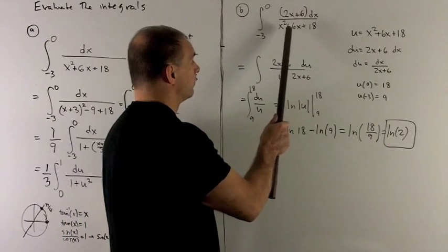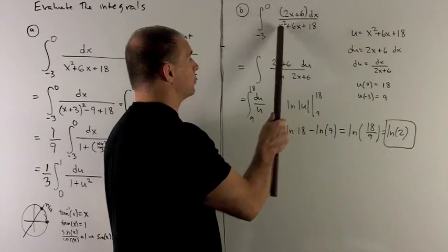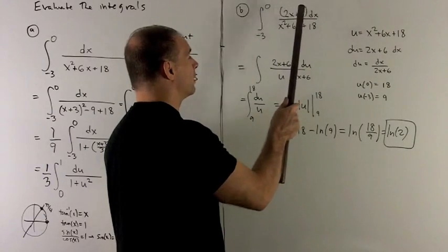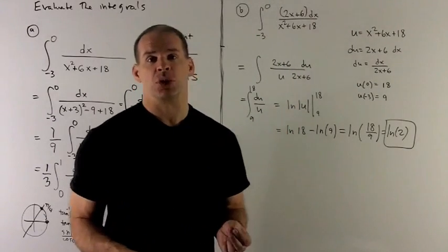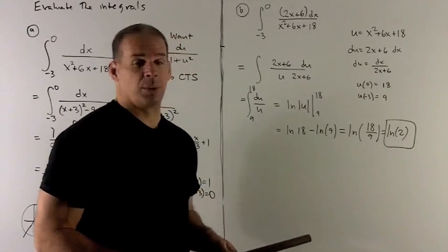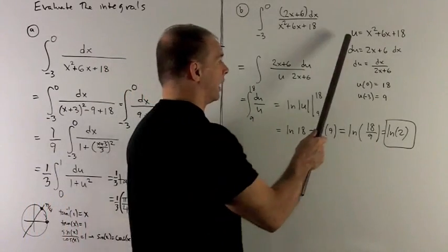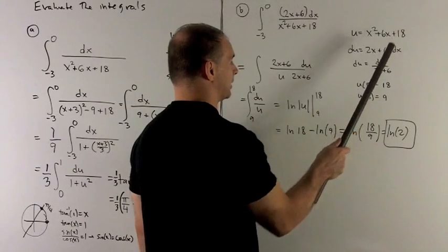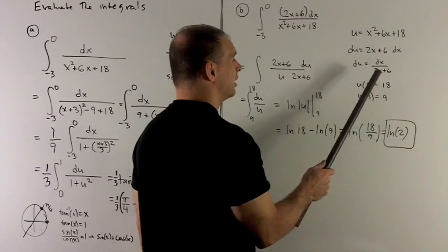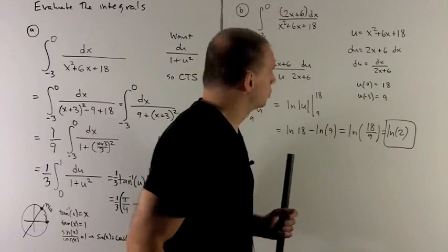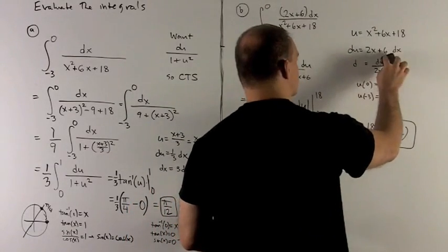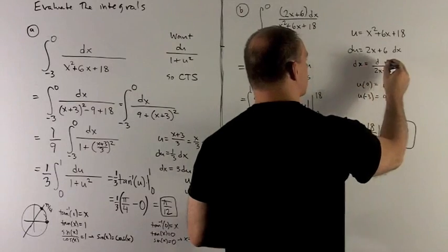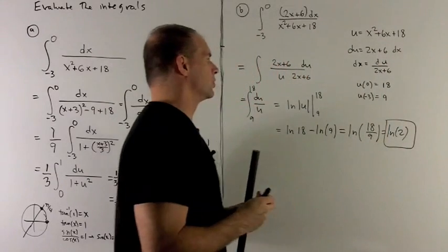The derivative of the bottom, okay, is going to be equal to the top. Derivative of this is 2x plus 6. So I have a function's derivative over the function itself. That's a natural log problem. So let's see what happens here. Okay I let u be equal to my quadratic. du is equal to the derivative of this with respect to x times dx. And so solving for dx is going to give me dx equals du over 2x plus 6.